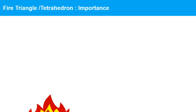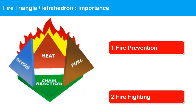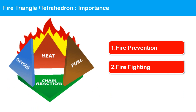The importance of the fire triangle: for fire to exist, three things must be present. Fire prevention — keep the three elements apart and fire cannot start. Fire fighting — remove one of the elements and the fire will go out.